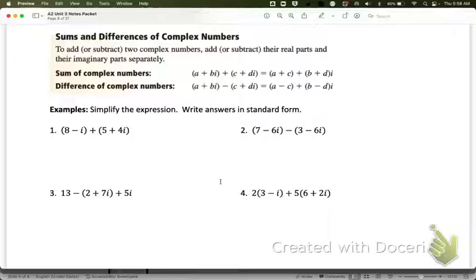I want to add 8 minus i, which is all one complex number, a plus bi, plus 5 plus 4i. I don't have anything to distribute because this is just a plus. So I can add the real number pieces, 8 plus 5, that gives me 13. And I can add the minus i and the plus 4i. So that gives me plus 3i. And that a plus bi is my new complex number. So when I add two complex numbers, the result is also a complex number. And that would be our answer.